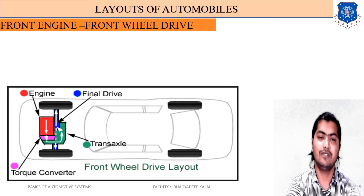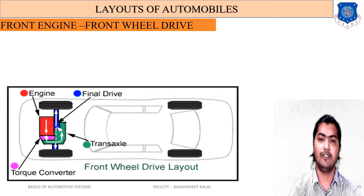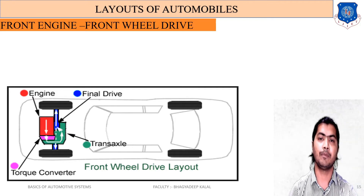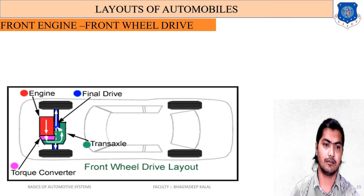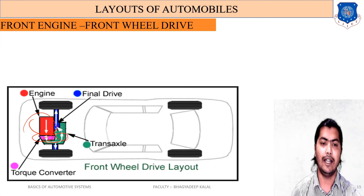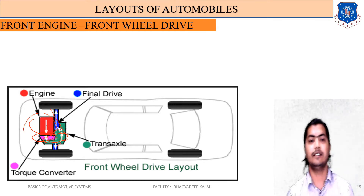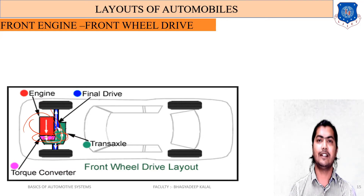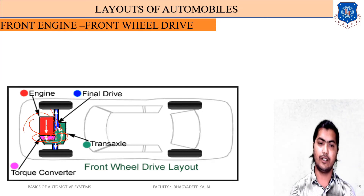Now let's understand front engine front wheel drive — a very important topic. In this system, the engine is mounted on the front side of the vehicle. Power is transmitted from the engine through the clutch, then to the gearbox, then to the differential. These three components — clutch, gearbox, and differential — are assembled as one unit called the transaxle. Finally, power is transmitted to the front axle, which is why it is called front engine front wheel drive. No propeller shaft is used in this layout.